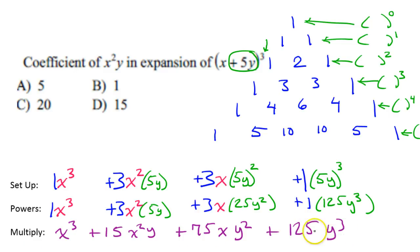So this is the final answer. Now we are specifically being asked for the coefficient of x squared y. So the coefficient of x squared y is 15, because there's your x squared y. So that's why the answer is D.